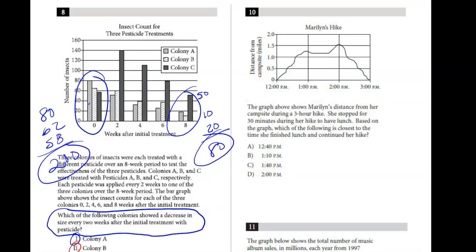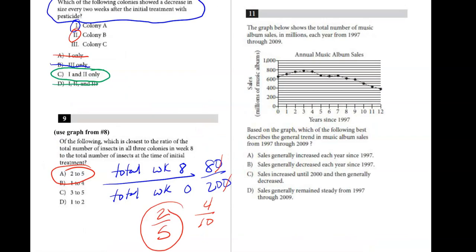Number 10 says Maryland's hike, and we're looking at the distance from the campsite and times of the day. So the graph above shows Maryland's distance from the campsite during a three-hour hike. She stopped for 30 minutes to have lunch. Based on the graph, what is the following closest time she finished lunch? So ultimate goal here is what is the time she finished lunch and then continued her hike? Well, looking at the graph, the period of time where she wasn't getting further or closer away from the campsite was right here. So that must have represented her lunch time. And if we kind of peek at the chart, it looks like it's going to be somewhere between 1 and 2 o'clock. The time closest to when she finished lunch and continued her hike is going to be right about here, which is past 1:30, probably looking at about 1:40. Correct answer there would be C.